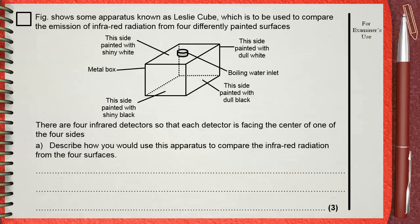The figure shows some apparatus known as Leslie Cube, which is to be used to compare the emission of infrared radiation from four differently painted surfaces. There are four infrared detectors so that each detector is facing the center of one of the four sides. Describe how you would use this apparatus to compare the infrared radiation from the four surfaces.